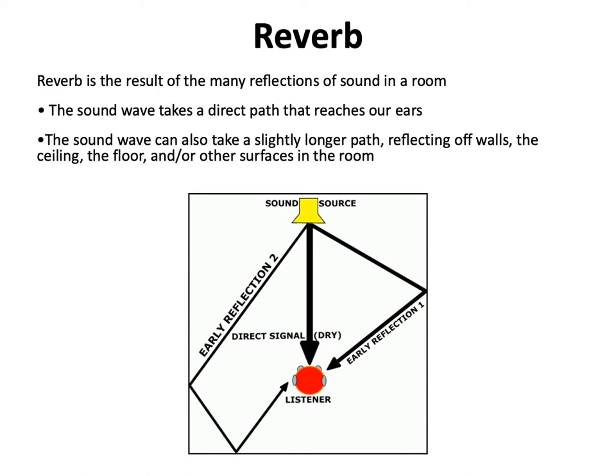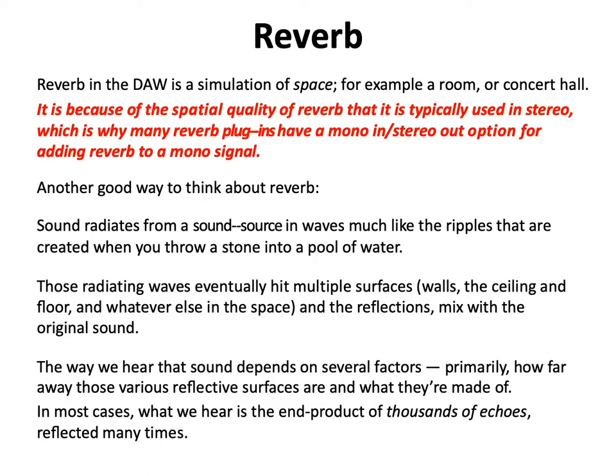Unless the reflections have a lot of intensity — if they have too much intensity, they can make the direct sound less clear. Reverb in a DAW is a simulation of space, for example a room or a concert hall. It is because of the spatial quality of reverb that it is typically used in stereo, which is why many reverb plugins have a mono in, stereo out option for adding reverb to a mono signal.